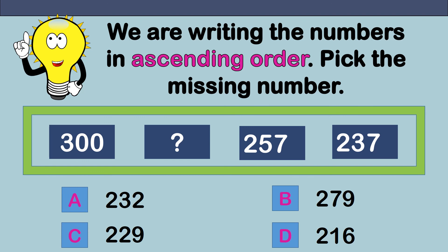We are writing the numbers in ascending order. Pick the missing number. In the box, we have 300, the missing number, 257, and last, 237. Can you guess the missing number? That's correct — 279.